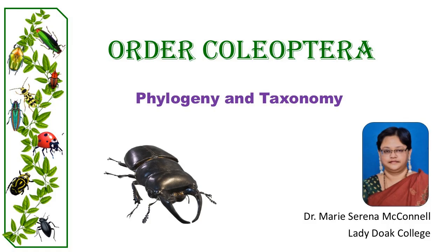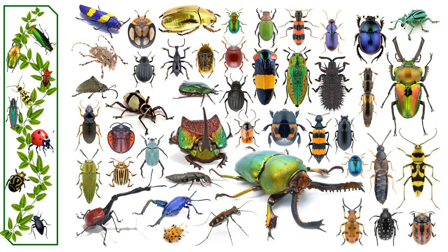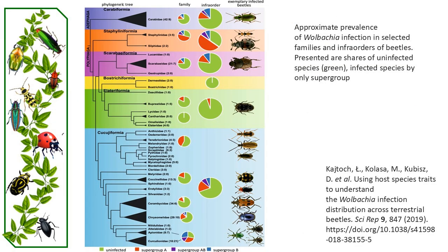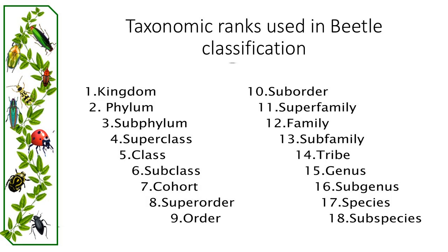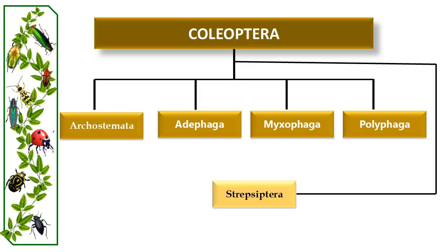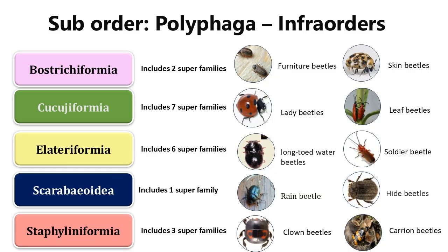Phylogeny and Taxonomy of Order Coleoptera. The vast number of beetle species creates classification challenges, with some families containing tens of thousands of species, necessitating further division into subfamilies and tribes. The largest suborder, Polyphaga, includes over 3 million described species in more than 170 families, such as the Rove beetles, Scarab beetles and True Weevils. Polyphagan beetles can be identified by the presence of cervical sclerites.